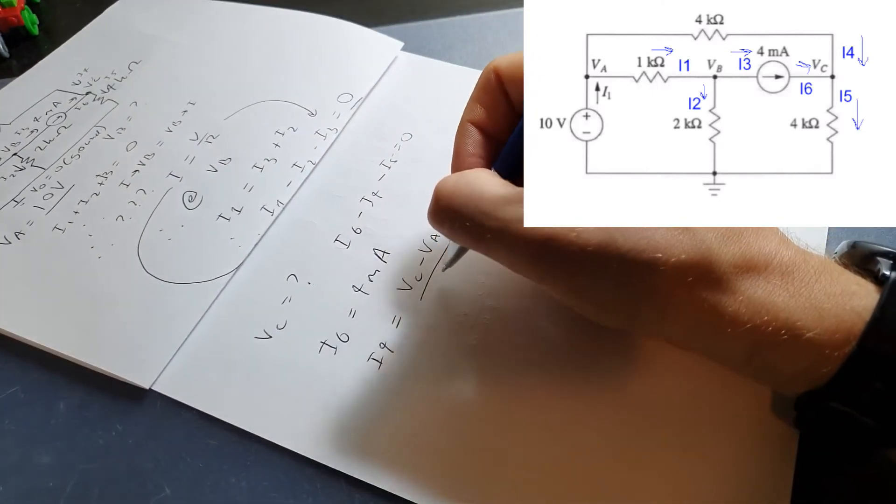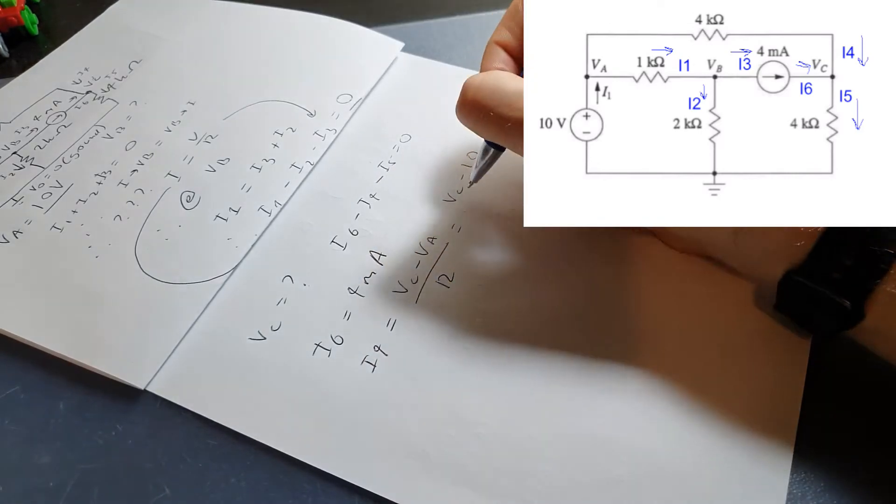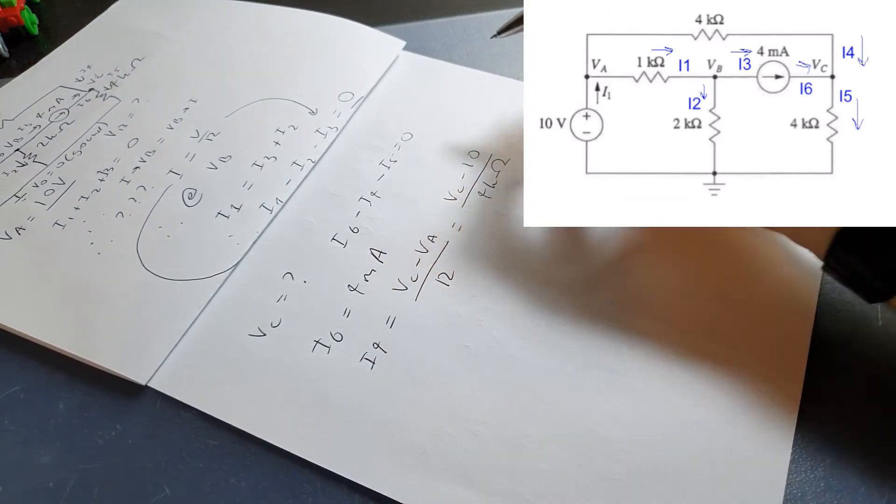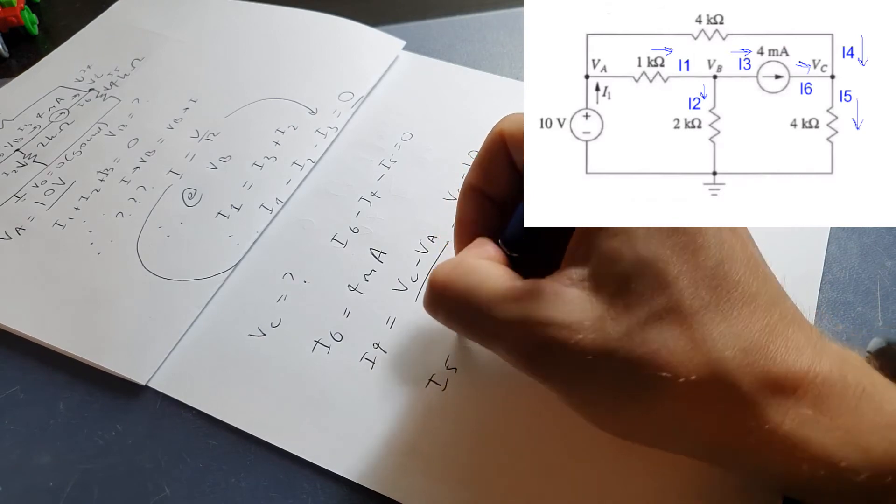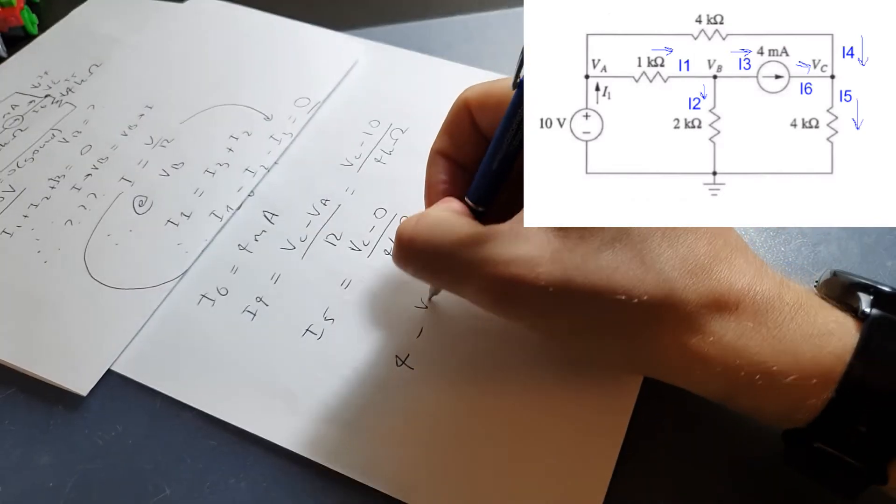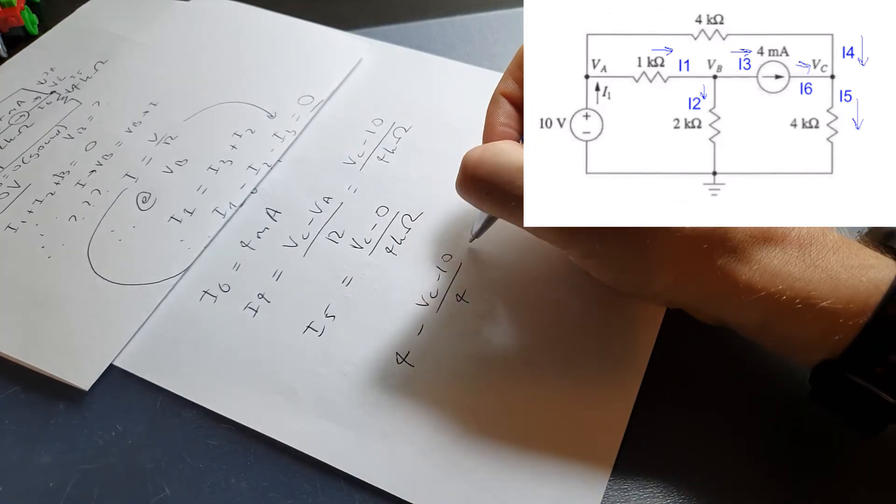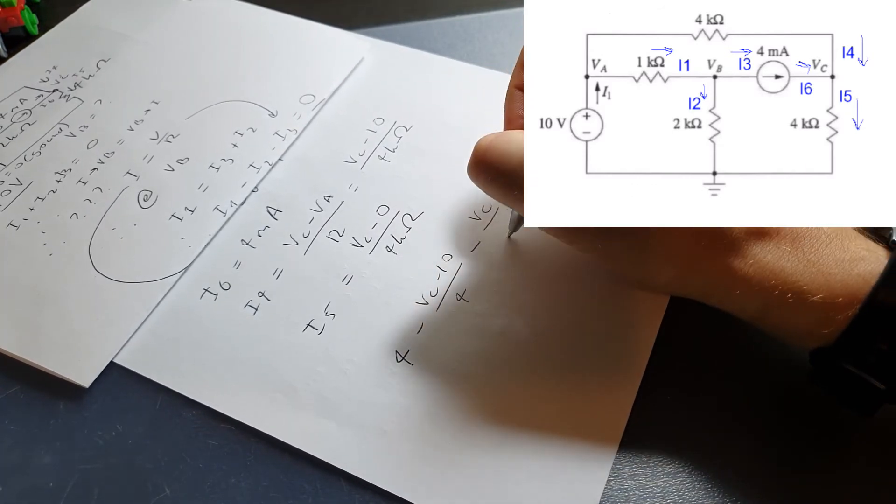We already know 4 milliamps equals I6, same as before, and I4 we can easily create a similar equation, once again knowing that VA equals 10. And we can use our reference node in order to simplify I5, creating another master equation in terms of VC.